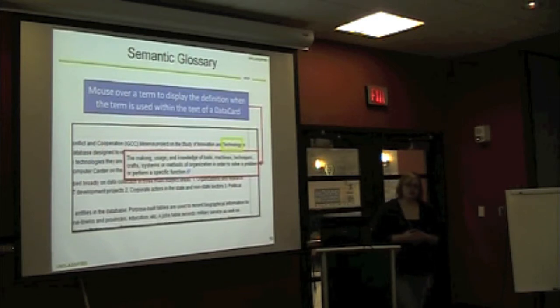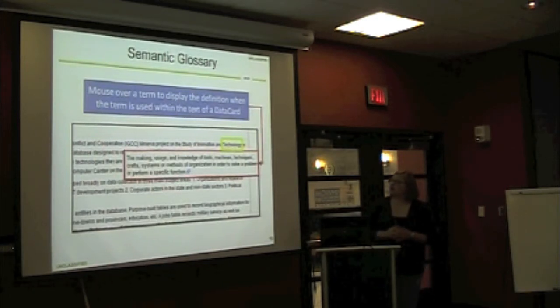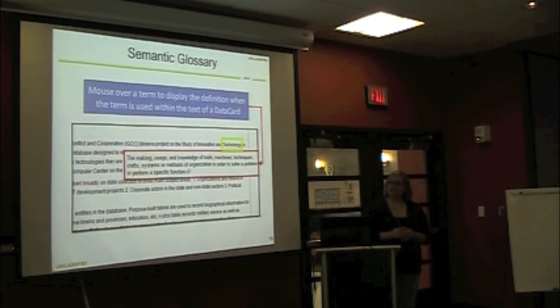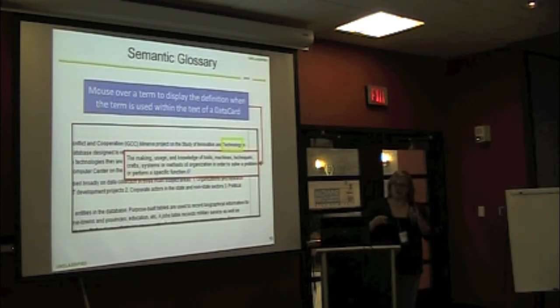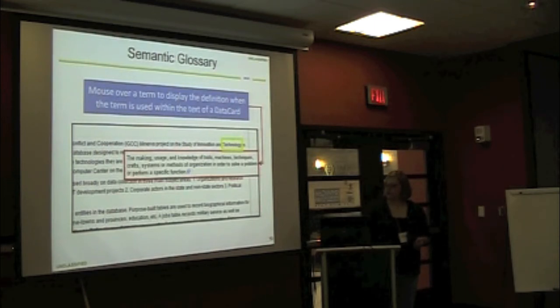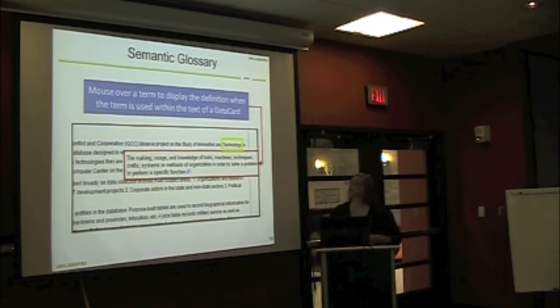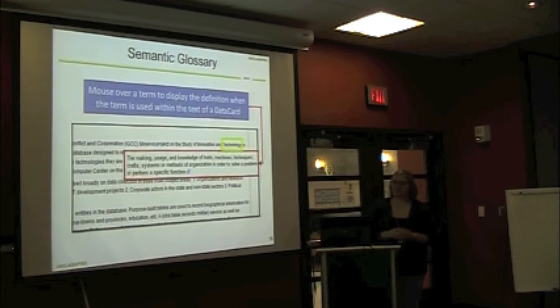We also use the semantic glossary extension. This allowed us, when we had our subject taxonomy terms, we used that to say something that was a little bit more maybe arbitrary. You can mouse over that term when it's defined, and it pops up with this box here and gives the description or definition.